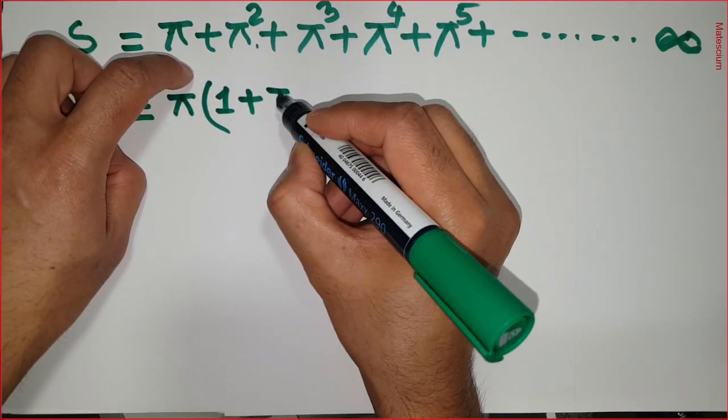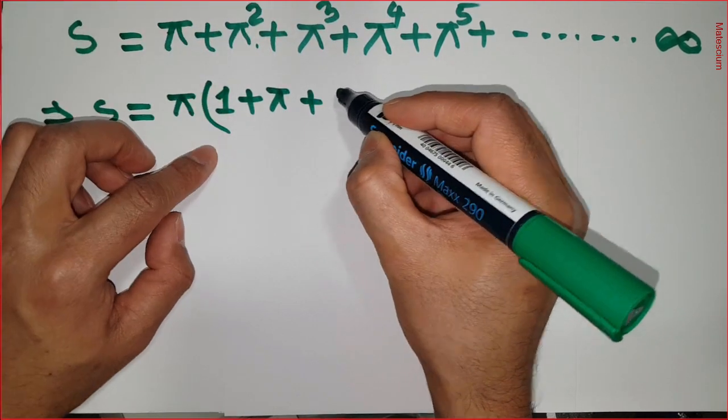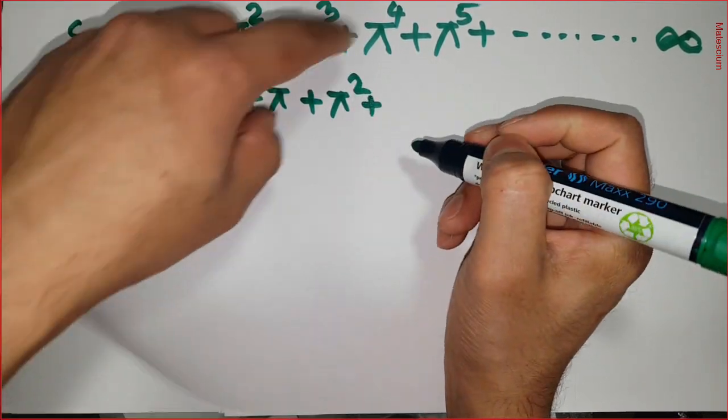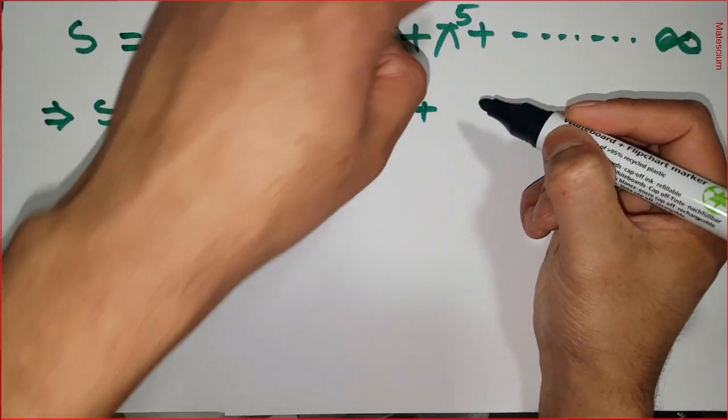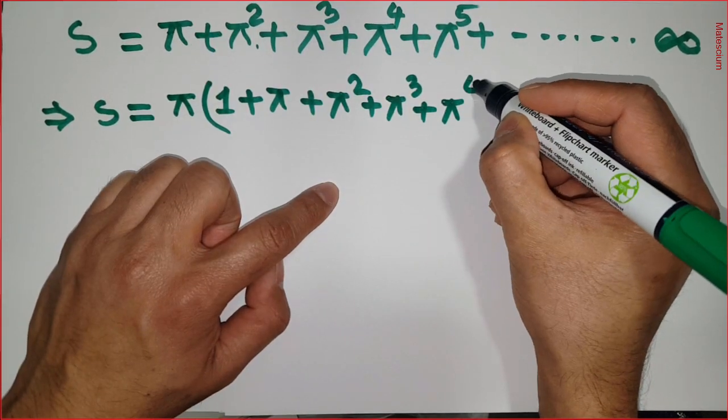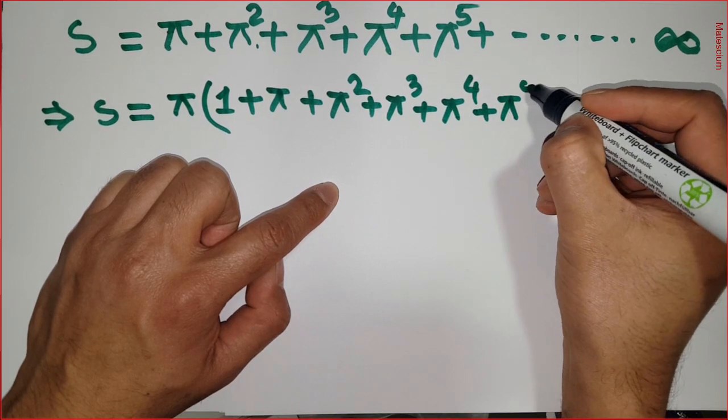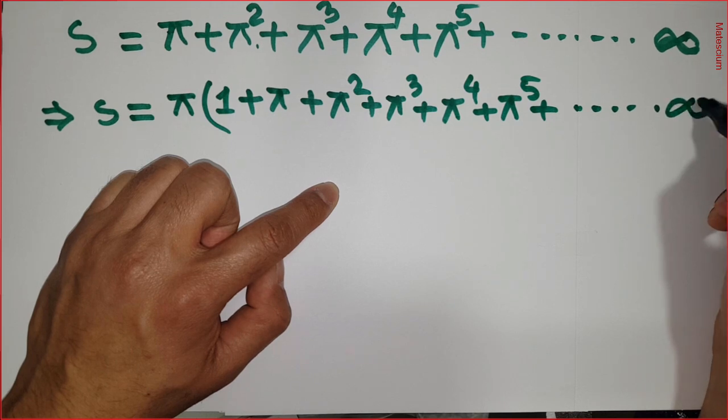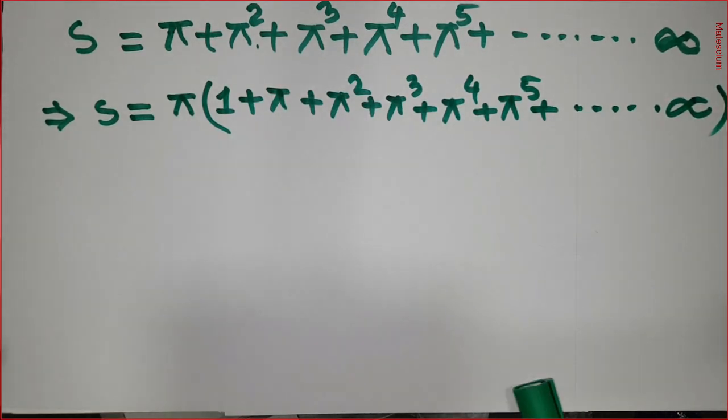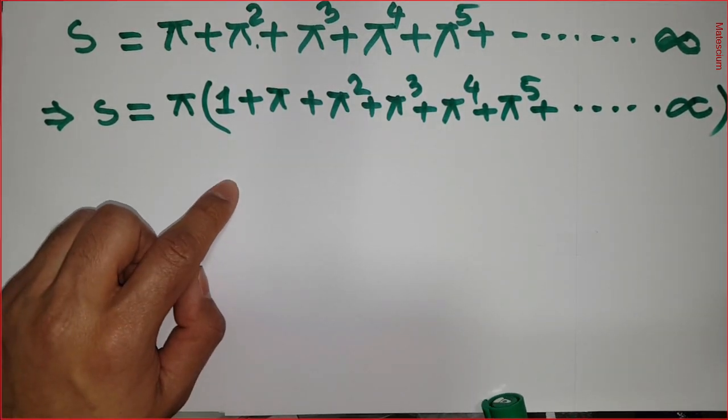If I take one π common, this statement becomes: π is one, then this π² becomes π, π³ becomes π², then this π⁴ becomes π³, and π⁵ becomes π⁴, plus π⁵, and this series continues similarly until infinity.